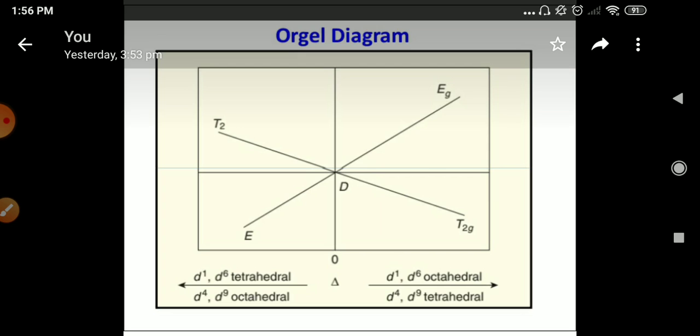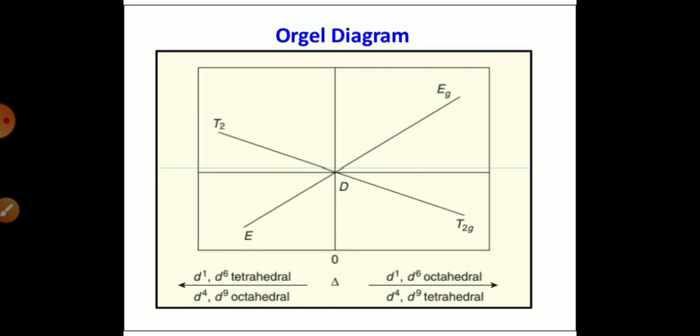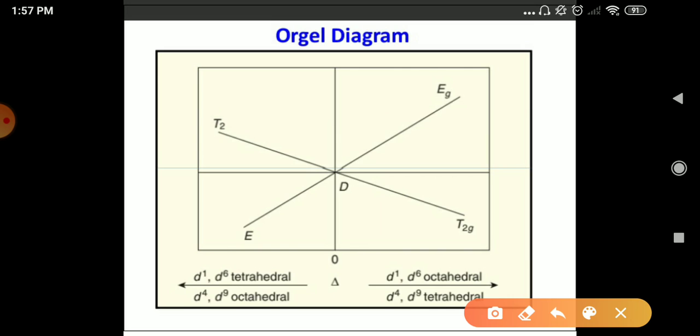For this diagram, we have explained D1 and D6 tetrahedral and D4 and D9 tetrahedral. So, these are the allowed transition for tetrahedral and octahedral D orbital from E to Eg and T2g to T2.